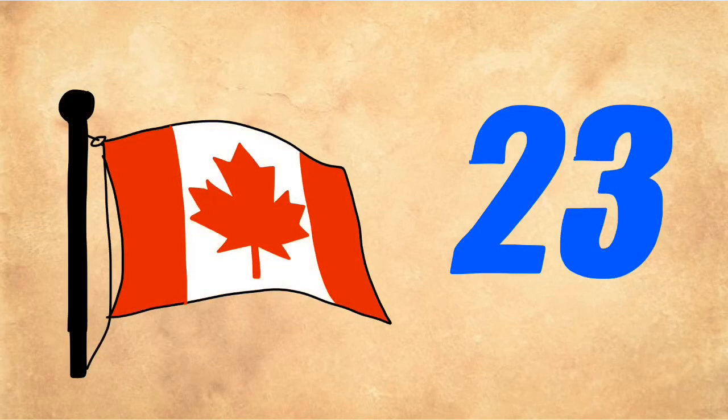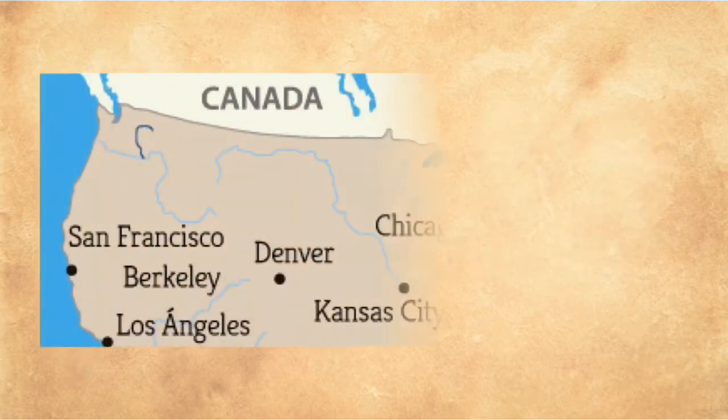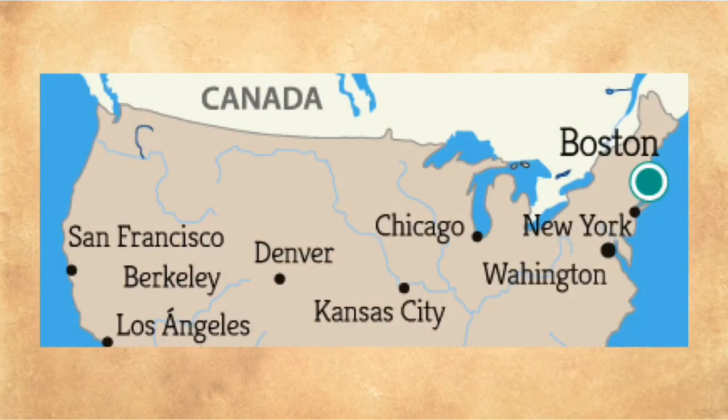When he was 23, he went to live to Canada because his parents didn't want him to get sick or die, just like his brothers did. In 1871, he moved to Boston, Massachusetts.